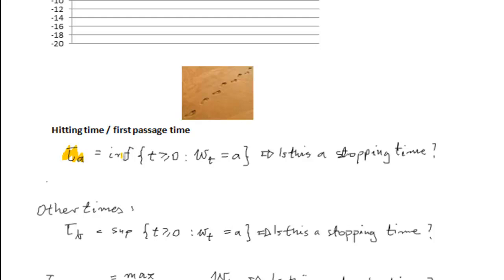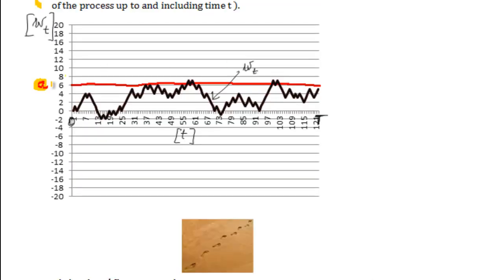we've got something called a hitting time or first passage time which is defined as follows. Passage time is the first time for t greater or equal to 0 that our random process hits level A. So a random process fluctuates and probably somewhere here, maybe here, it will hit the first time at level A.